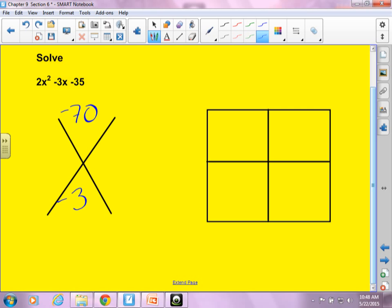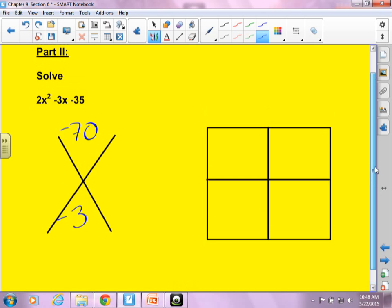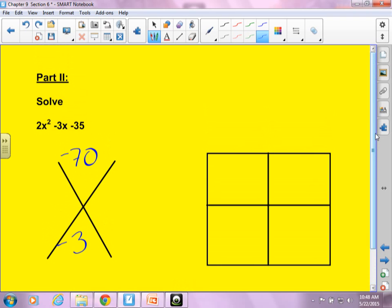Now, the student that had trouble with this earlier today, if you have trouble with the factor part of it, all you need to do is make a list. So like, you know, 1 times 70. 2 times 35. 3 doesn't go into it. 4 doesn't go into it. 5 goes into it. So it's 5 times what?